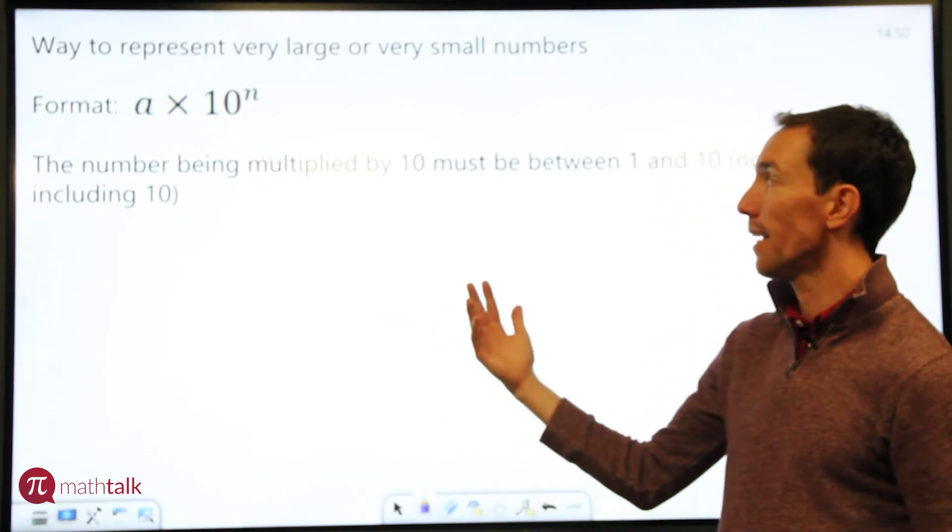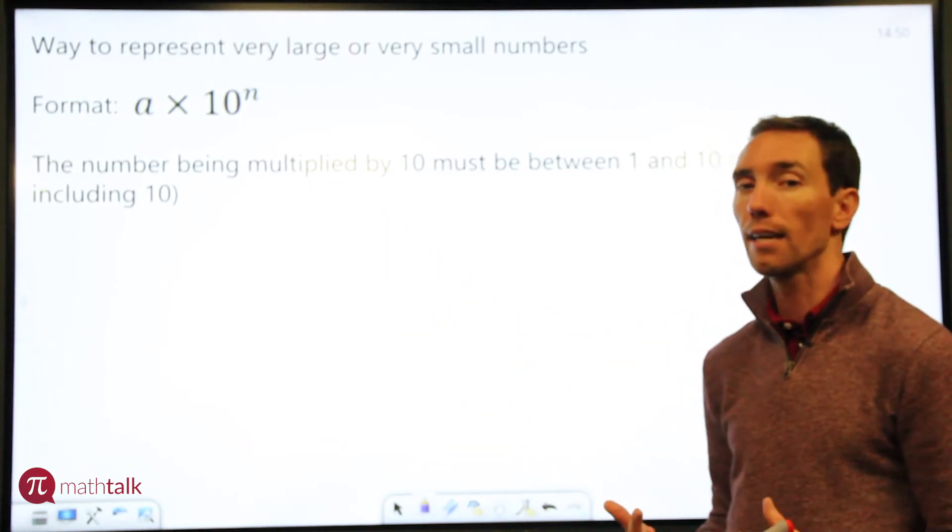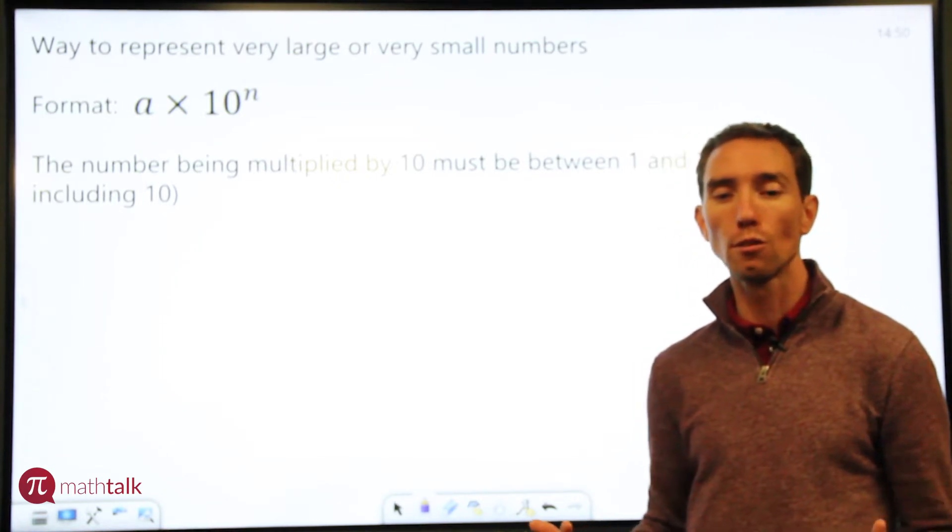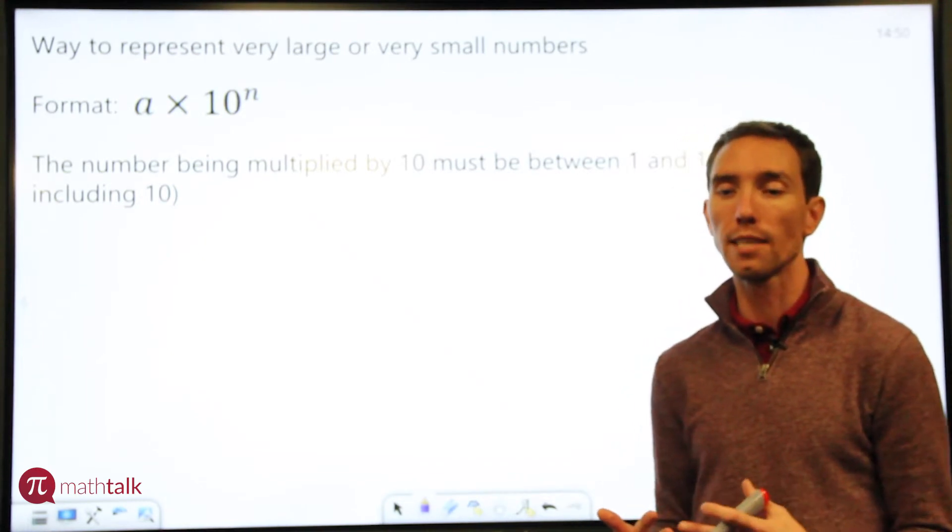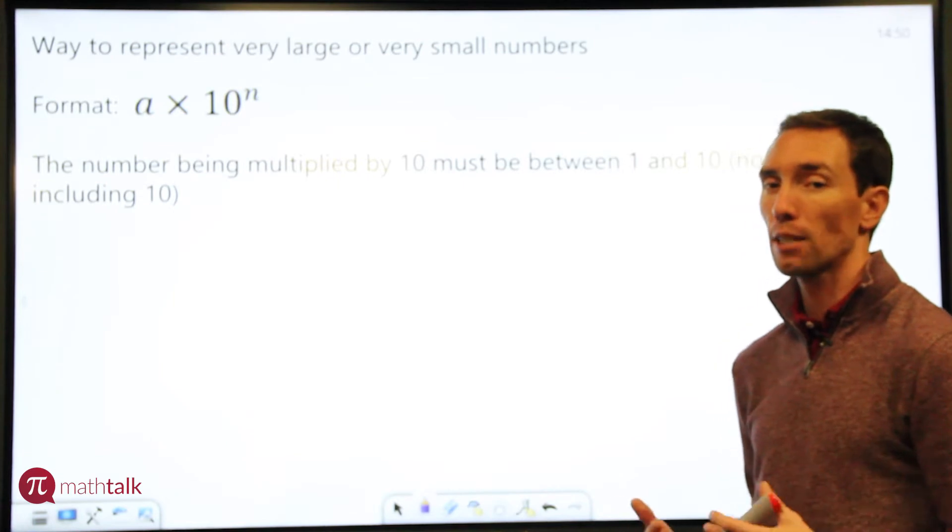And that number that you're multiplying by 10, in this case a, has to be a number between 1 and 10, not including the number 10. Basically it has to be a single digit number. It could be 1 or 2 or 5 or some decimal, 3.2 or 6.87, as long as it's between 1 and 10. That's what you want to keep in mind.